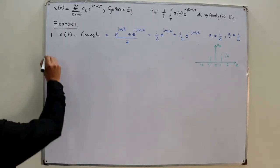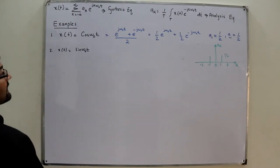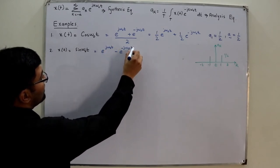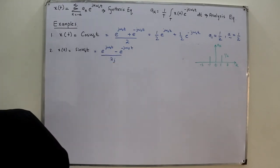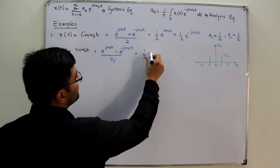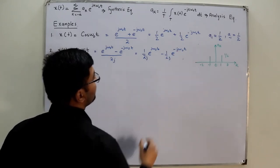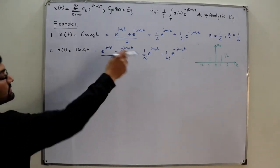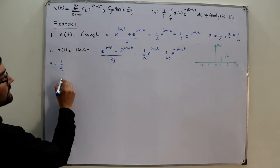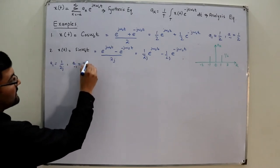Similarly, now we have sin(ω₀t). If x(t) = sin(ω₀t), again this can be written using Euler's theorem as [e^(jω₀t) − e^(−jω₀t)] / (2j). Expanding it: (1/2j)e^(jω₀t) − (1/2j)e^(−jω₀t). Comparing with the synthesis equation, for e^(jω₀t) this is k = 1, so a₁ = 1/(2j).